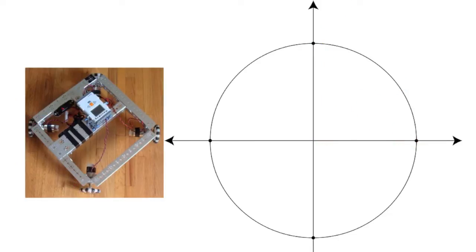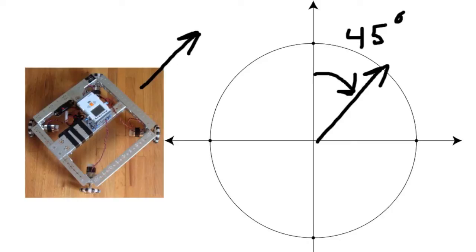Let's say we want to move at a 45 degree angle. Well, we have no wheels pointing in that direction, so we need to figure out how to make our existing wheels work together to move in that 45 degree direction.